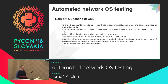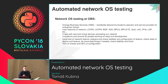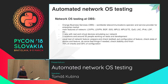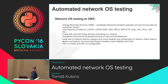Orange Business Services is a worldwide telecommunication operator and service provider, mainly operating on the enterprise market. Our main business is that if you have some big company with offices in India, Europe, and headquarters in the US, the usual task is providing interconnection of those offices. We provide different solutions, mostly built on private VPN networks. Our core network is based on protocols well known for networking: L3 VPN, L2 VPN, BGP, ISIS, IGP protocols, MPLS, QoS, IPv6, LDP, and many more.